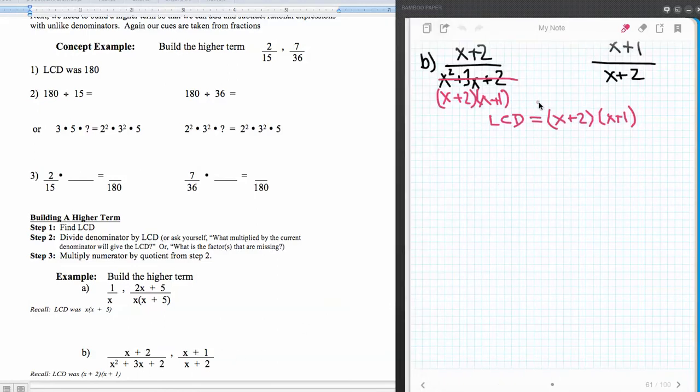All right. Now moving on to our second example here. Remember our second example, x plus two over x squared plus three x plus two. And we had x plus one over x plus two. So we found our least common denominator by factoring first and then finding the least common denominator was x plus two times x plus one. Well, this one already has that. So that one again is already the higher term. So let's focus our attention on this one.